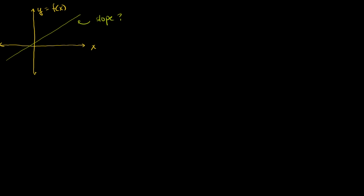What we do is we take two points on the line. Let's say we take this point right here — let's say that's the point where x is equal to a. This would be the point (a, f(a)), where the function is going to be some line. We could write f(x) = mx + b. We don't know what m and b are, but this is all a bit of review. So this is a, and the y-value is what happens when you evaluate the function at a.